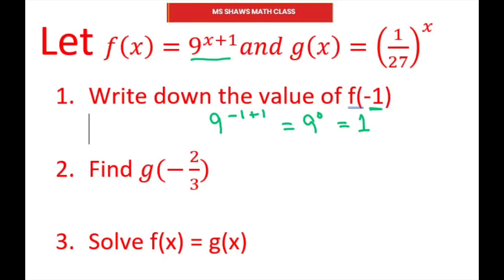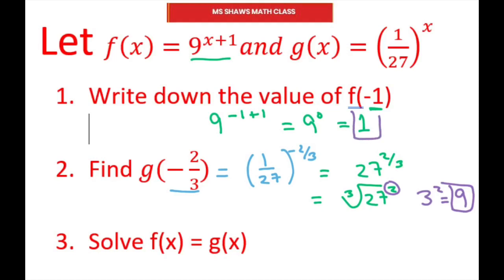On this one we're going to do the same thing. We're going to write g of negative 2/3 equals 1 over 27 to the negative 2/3 power. I'm going to get rid of this negative by flipping this, so this will be 27 to the 2/3, which is the same as saying cube root of 27 squared. If I cube root 27 I get 3, and then we're going to square it, so your final answer is 9.